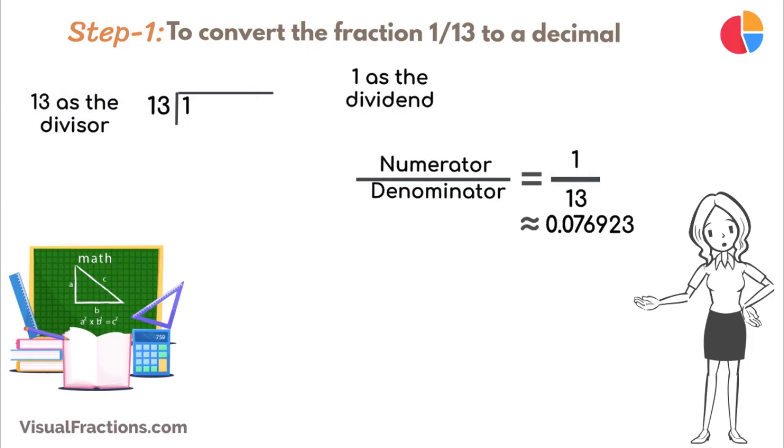Since 13 doesn't fit into 1, place a decimal point in our quotient and bring down a 0, making it 10. 13 goes into 10 0 times, so we initially put 0 in the quotient before the decimal.